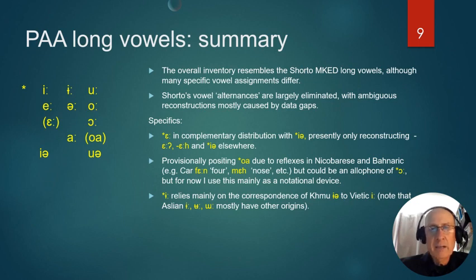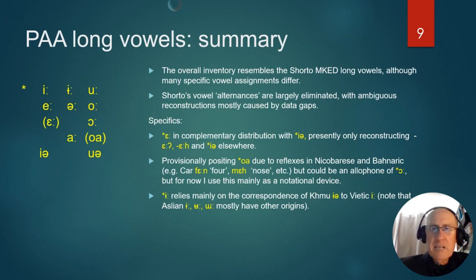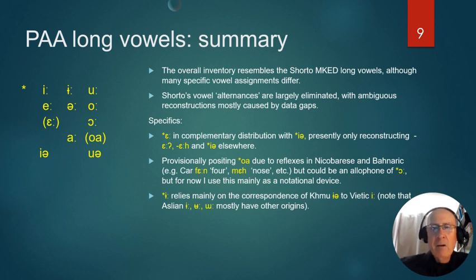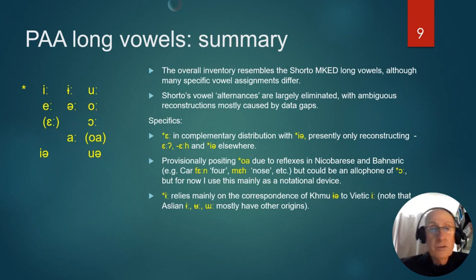Specifically, we have etymologies like 'car,' 'fan,' 'for,' 'meh' for nose, etc. — similar forms with front vowels where we have a back vowel in the rest of the family. These could be an allophone of a back vowel; I think they probably are, but for now I'm using this as a notational device to highlight this correspondence. Unlike Shorto, I'm also reconstructing an Ea vowel, relying on a correspondence of Khmu Ea to Vietic Ea. Note that the high central vowels in Aslian actually go back to other origins, so they're not helpful in this case.